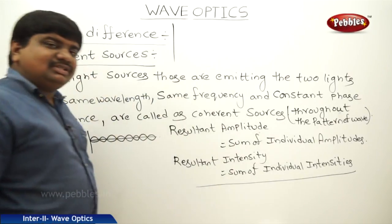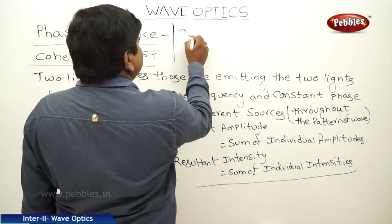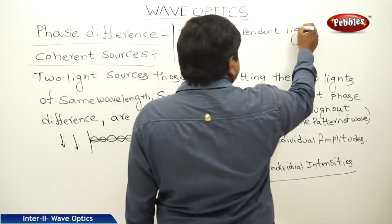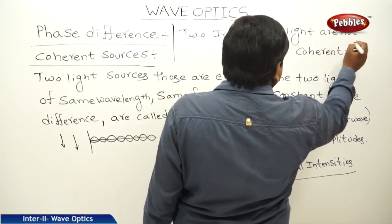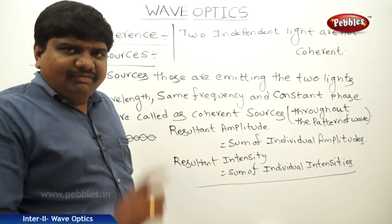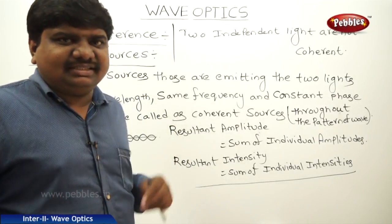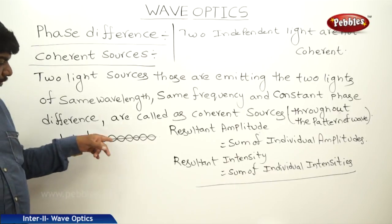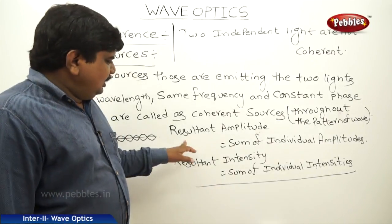Two independent lights are not said to be coherent. Two independent lights are not coherent. Coherent sources must share the same wavelength and same frequency and maintain a constant phase difference.